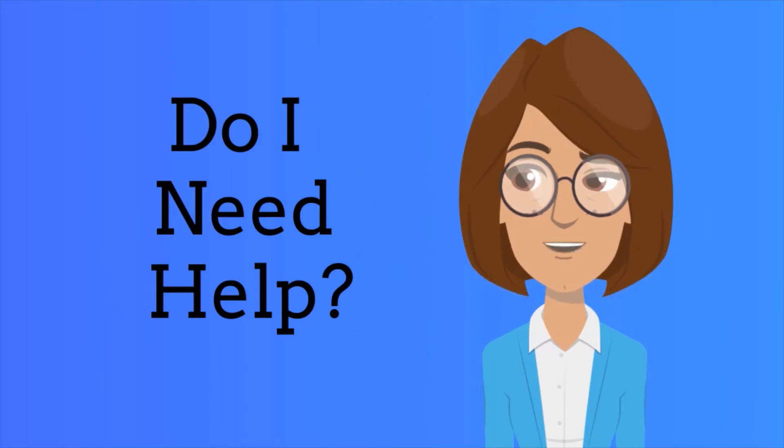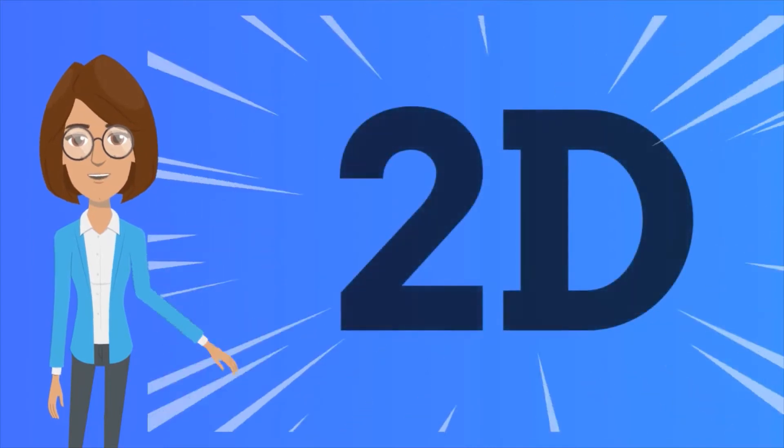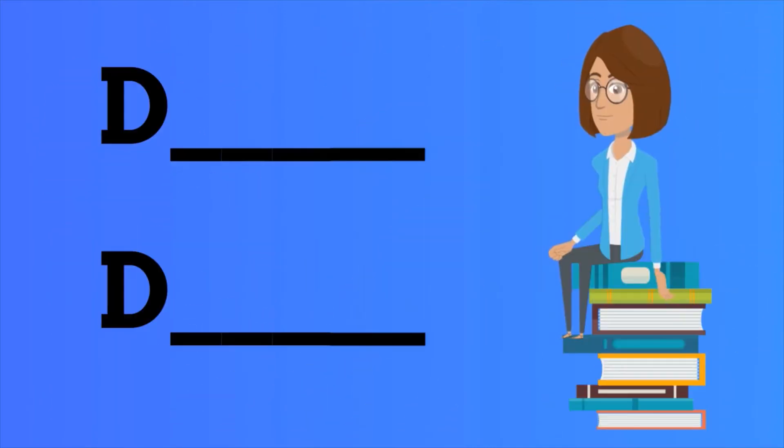But even knowing that, it can still be a little bit tricky to figure out when you go get an adult and when you try to solve the problem yourself. There's a special little rule that can help us figure out whether to go get an adult. It's called the 2D Rule. There are two words that start with the letter D, and if my problem has either of these words in it, I have to go get an adult right away.